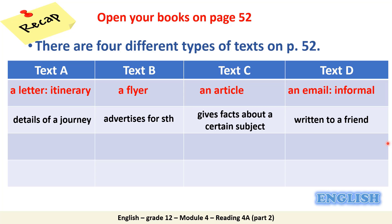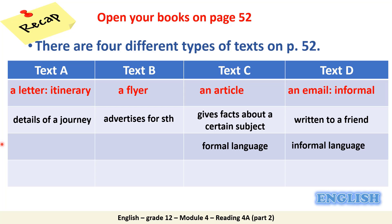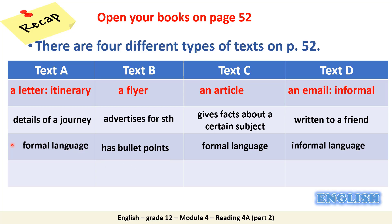Which of the four texts uses informal language? It is text G, the email — it is written to a friend, so we use informal language. We have two texts that are written using formal language: the article and the itinerary. Which of the texts has bullet points? This is the flyer — we have the details written in bullet points.